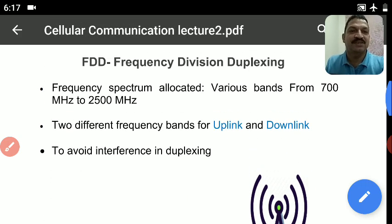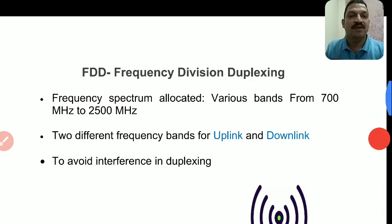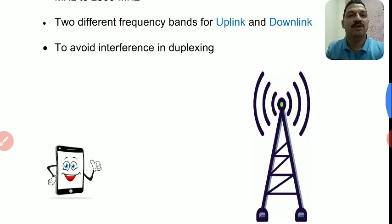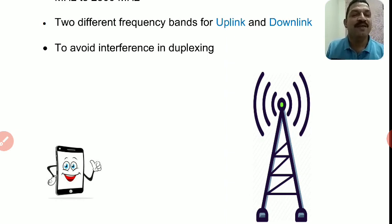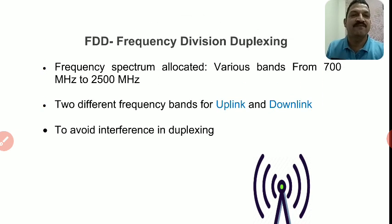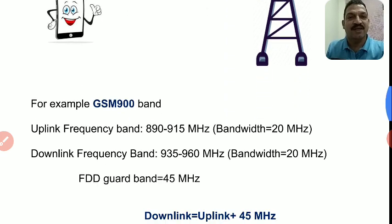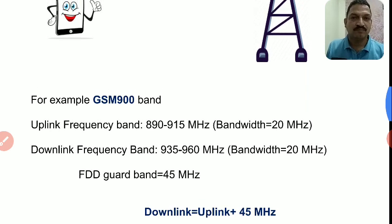इन दो frequency ranges की जरूरत पड़ती है क्योंकि हमारा mobile phone एक duplexing system है। Duplexing system में हम हमारी information को transmit भी करते हैं और receive भी करते हैं। Transmit और receive दोनों simultaneously चलता है उसको हम duplexing कहते हैं। तो cellular communication में duplexing system की जाती है — Frequency Division Duplexing, FDD। Frequency Division Duplexing means एक frequency का set uplink के लिए और एक frequency का set downlink के लिए, और uplink और downlink frequency में difference होता है।